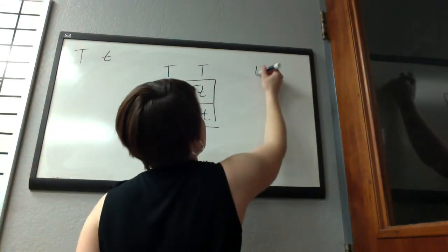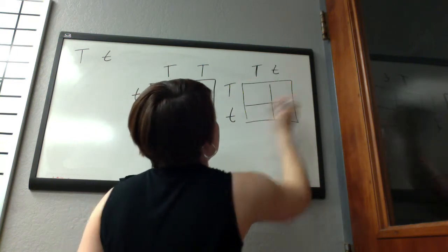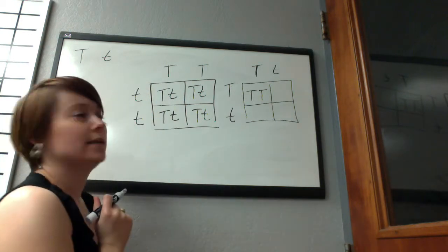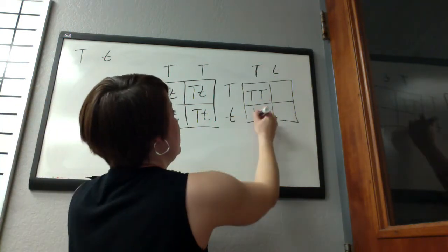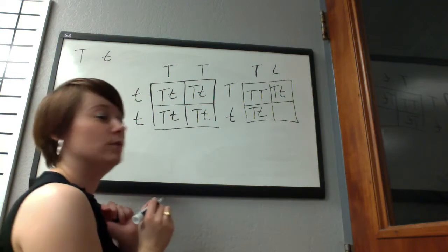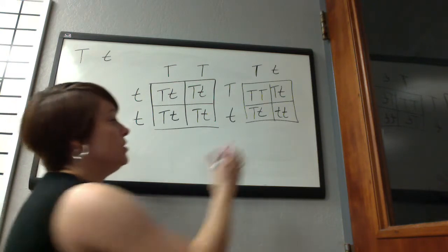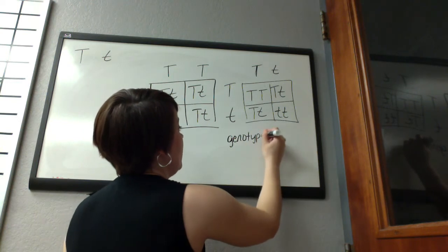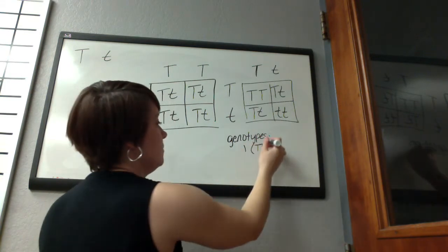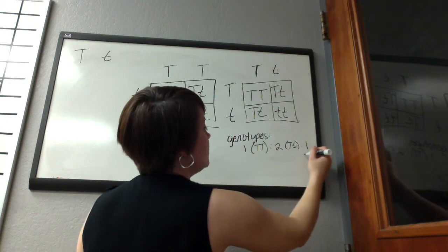Now if you cross a heterozygous plant with another heterozygous plant, you get a slightly different pattern. The first offspring has a homozygous dominant genotype, then you get a heterozygous individual, then another heterozygous individual, and finally a homozygous recessive — so two recessive alleles. Talking about the genotypes of the offspring: you've got one homozygous dominant, to two heterozygous, to one homozygous recessive.